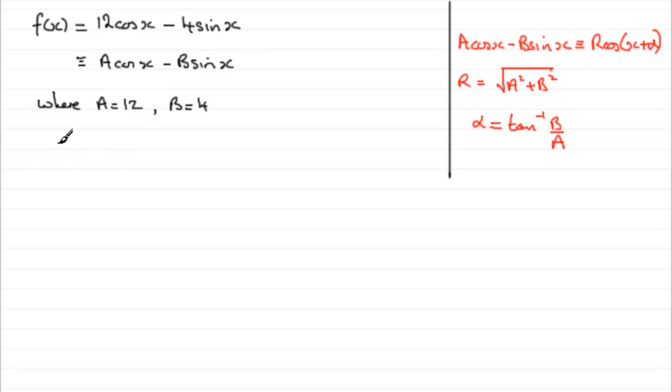That means that we can work out what r is. r then is the square root of a squared plus b squared. So, in other words, 12 squared plus 4 squared. This comes out at the square root of 160. And you can leave it like that if you wish, or you could see this as 16 times 10, which would then be the root of 16 times 10. And that comes to 4 root 10.